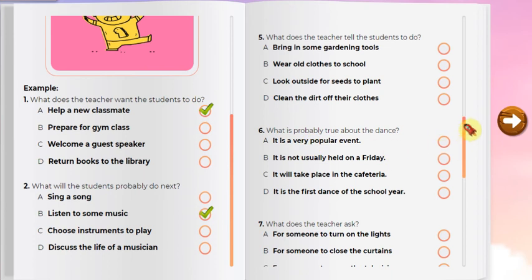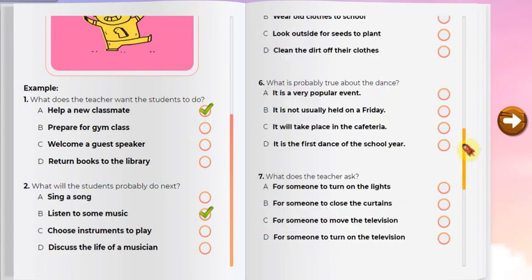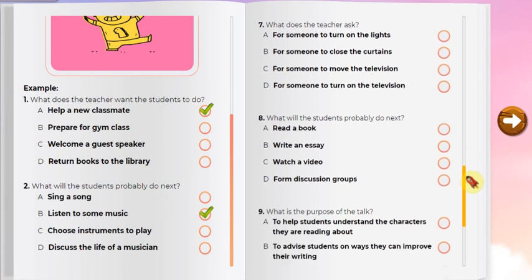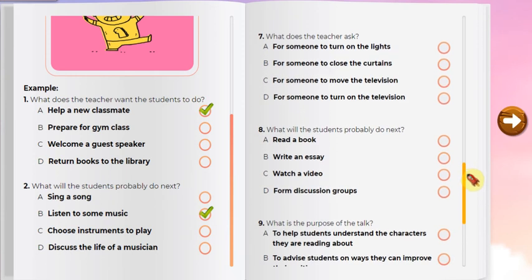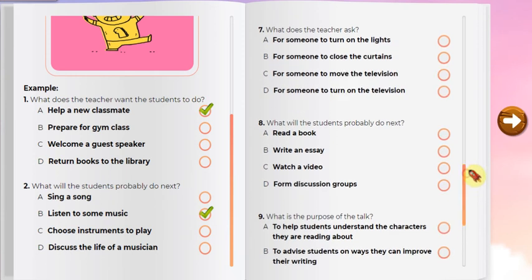Number seven. Listen to a geography teacher talking in a classroom. Now we're going to watch a documentary program about one of the countries we've been discussing in class, but I'm afraid it's a little too bright in here. Could someone please draw the curtains while I turn on the TV? Then there won't be any glare on the screen and everyone will be able to see just fine. What does the teacher ask?